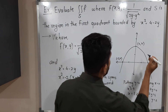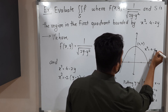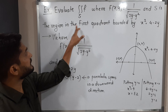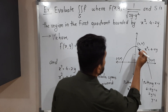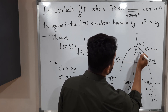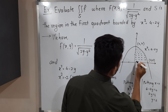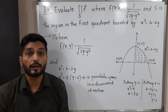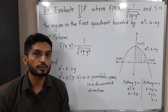They have clearly mentioned the region in the first quadrant — that means the region bounded by this parabola which is in the first quadrant. With the help of that region, we have to find the limits of this integration, and then we can solve it easily.